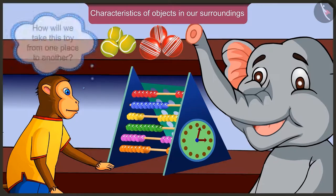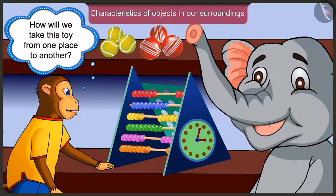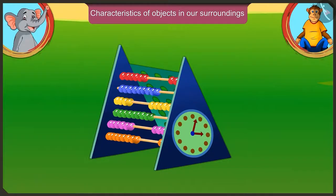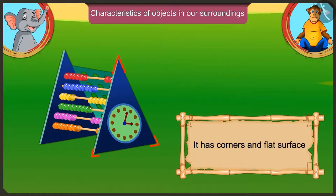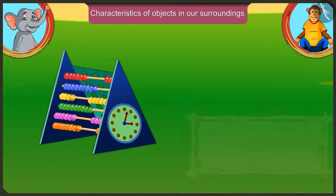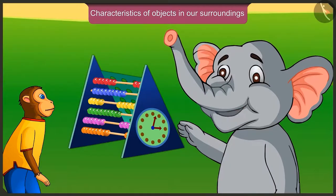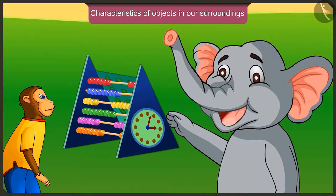Appu, how are we going to take this toy from one place to another place? Oh, this is a very big toy. It is not round. It has corners and also flat surface. For that reason, we cannot roll it like a ball. We will slide it like this.